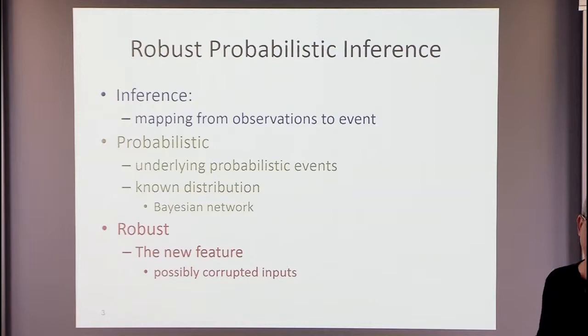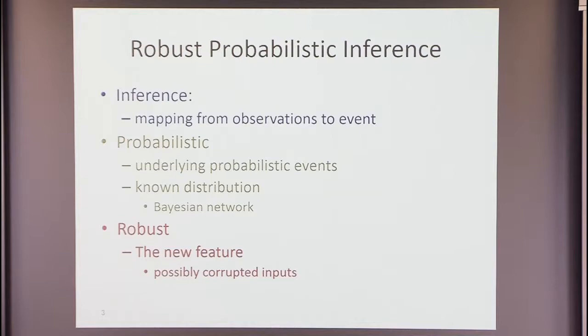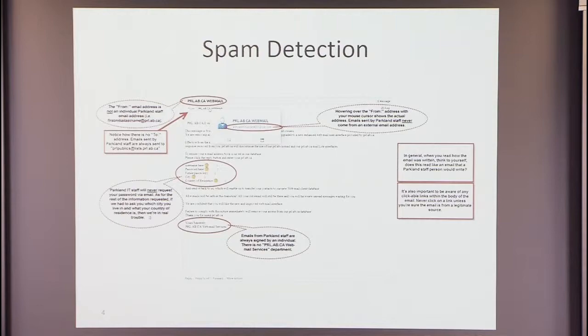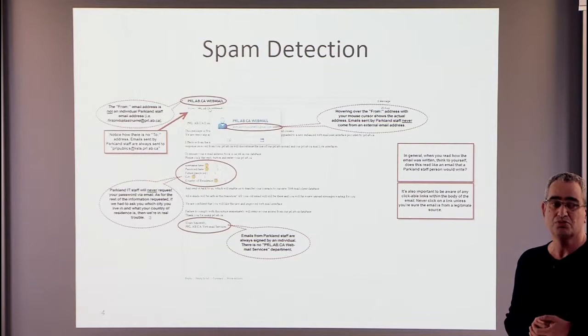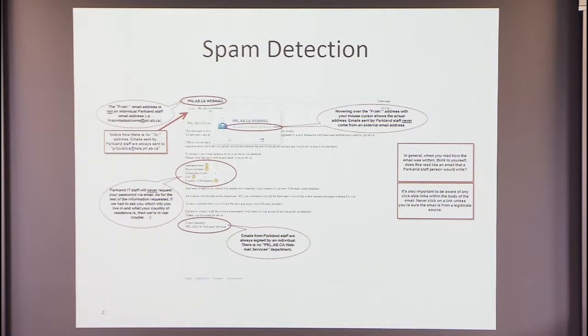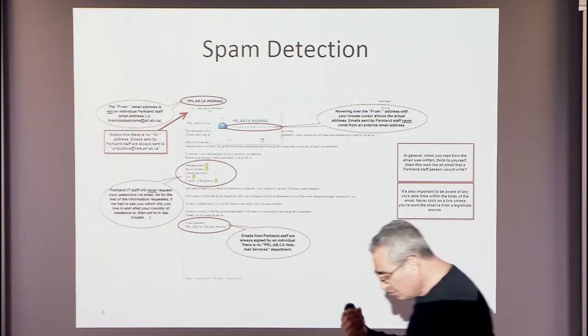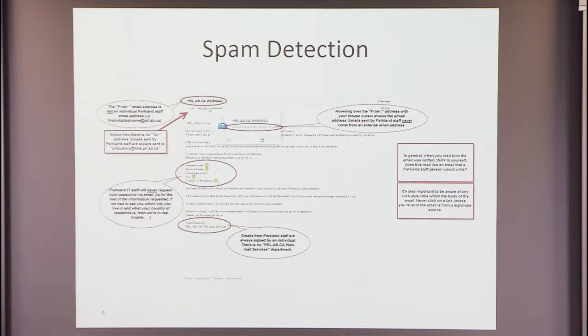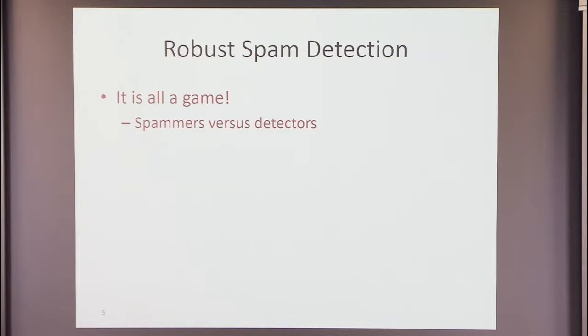Robustness is about the possibility of corrupting the inputs. Usually when we talk about inference, we think we are seeing an observation that depends on the state of the world. In robustness, we take into account that maybe what we are seeing is not the truth. The first motivating example is spam detection. When you build a spam detector, you're trying to detect many small filters — who sent the email, how many times 'Viagra' appears, how many exclamation marks. You're trying to detect small anomalies and, based on those, classify the email as spam.